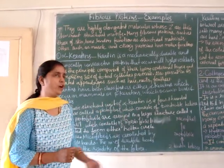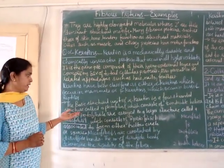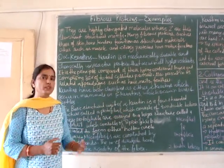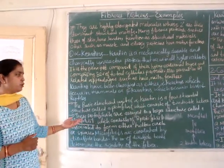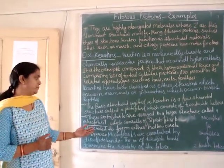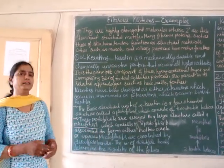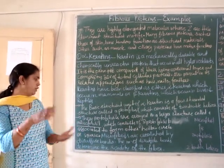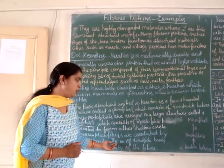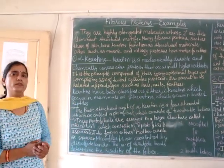The basic structural unit of alpha keratin is a four-stranded double helix structure called a protofibril, which consists of two double helices. These protofibrils are then arrayed in a larger structure called a microfibril, which consists of eight protofibrils and they associate to form either a hollow circle or a hollow square. Microfibrils are then cross-linked by disulfide bonds, and the number of disulfide bonds determines the rigidity of the fiber.